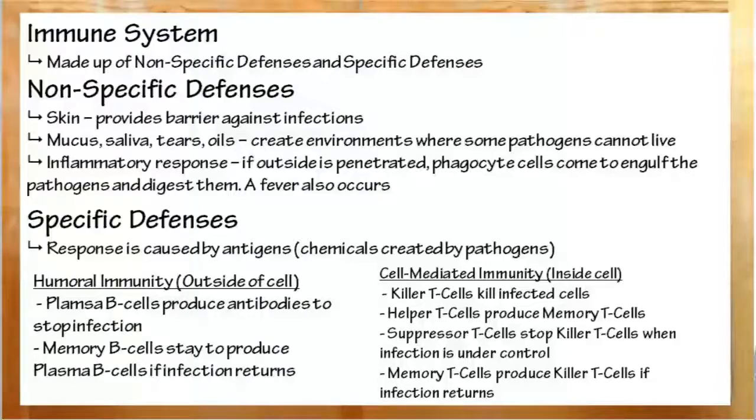Cell-mediated immunity is for infections within cells, such as viruses and protists. Here we work with T cells. Killer T cells will kill off whatever's infected, cells and the pathogen. Helper T cells, which will create memory T cells to remember which T cells did the right job later on and fight off the infection more efficiently. Suppressor T cells. Once the fight starts coming under control, the infection starts coming under control, the suppressor T cells will end the work of the killer T cells and the body will restore itself to normality. And we've already talked about memory T cells. Again, we're simply produced by helper T cells to remember how to fight off the infection.